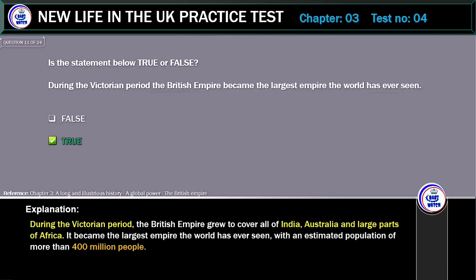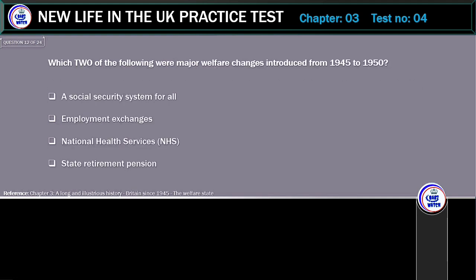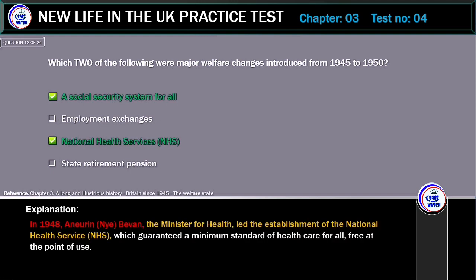Which two of the following were major welfare changes introduced from 1945 to 1950? Options: a Social Security System for All, Employment Exchanges, National Health Services, or State Retirement Pension. The correct answers are a Social Security System for All and National Health Services. In 1948, Aneurin Bevan, the Minister for Health, led the establishment of the National Health Service, which guaranteed a minimum standard of health care for all, free at the point of use.